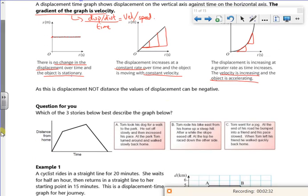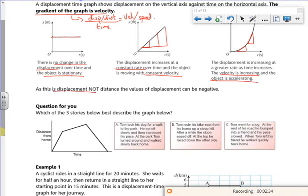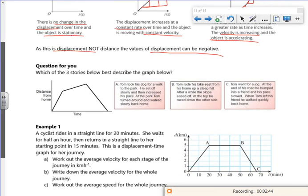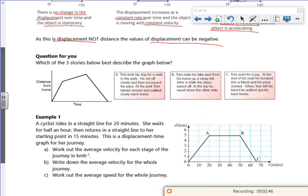Right. So just be careful because it's displacement and it's not distance. The values can be negative. So I've added like distance and speed in here. That'd be just a top part of it if you look careful. Right. So let's have a look.